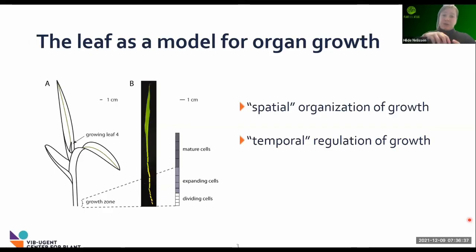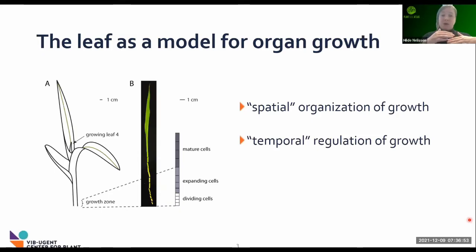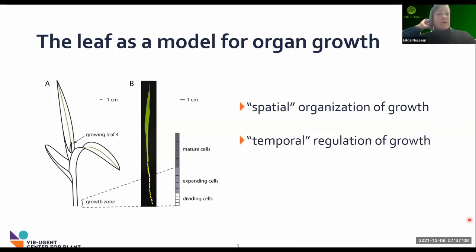When the leaf emerges from the whorl of the older leaves, there is also a time factor involved, because the size of these particular growth zones — the division zone, expansion zone, and mature zone — also differs over time. They are relatively small, they expand as the leaf is growing, they stay maximal when the leaf is appearing and a few days after that, and then these growth zones start to decline again. So that is both a spatial and a temporal regulation of growth.